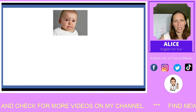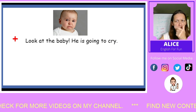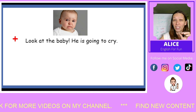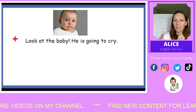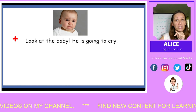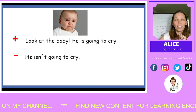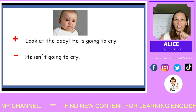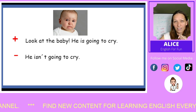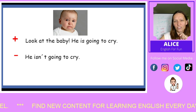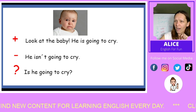Look at this baby. He's going to cry. Look at his face — he's going to cry. We're making a prediction based on evidence: looking at the face of the baby, we can see that he's about to cry. Negative: He isn't going to cry. Question: Is he going to cry? Look at his face — is he going to cry?